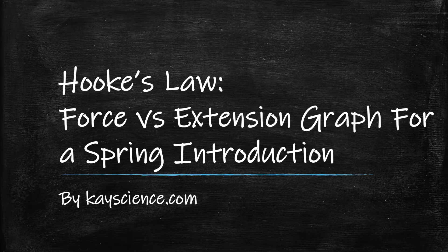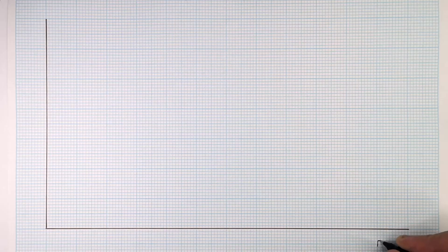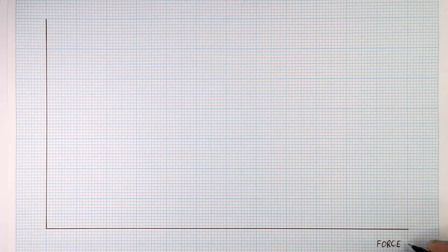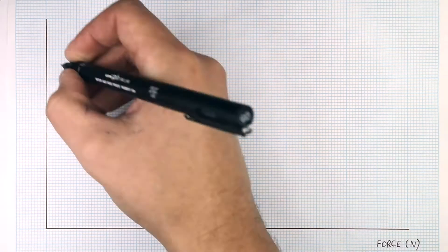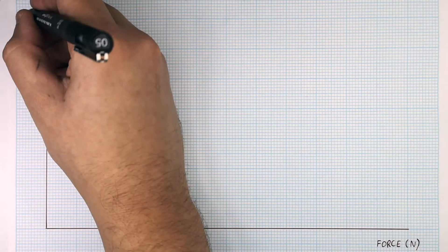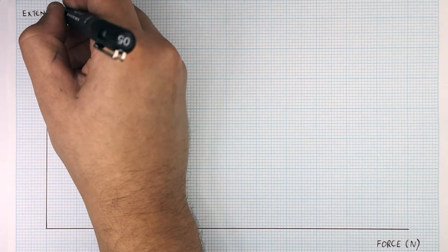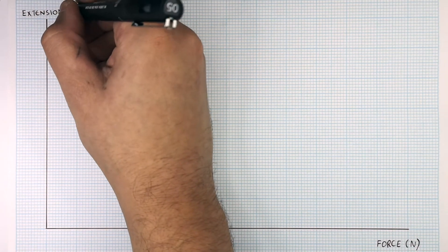Hooke's Law: force versus extension graph for a spring — an introduction by kscience.com. This graph shows the force along the x-axis and the extension in centimetres along the y-axis.